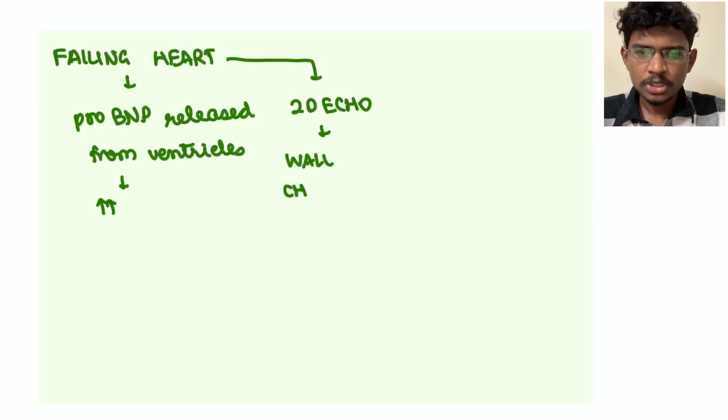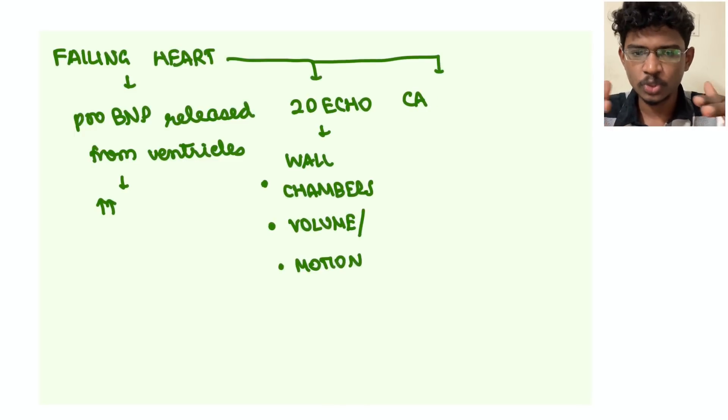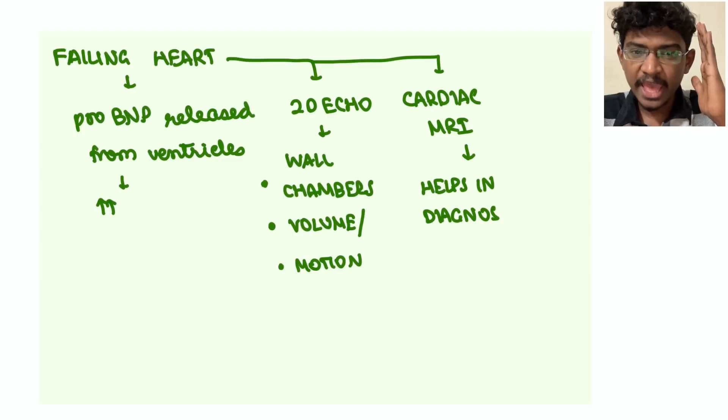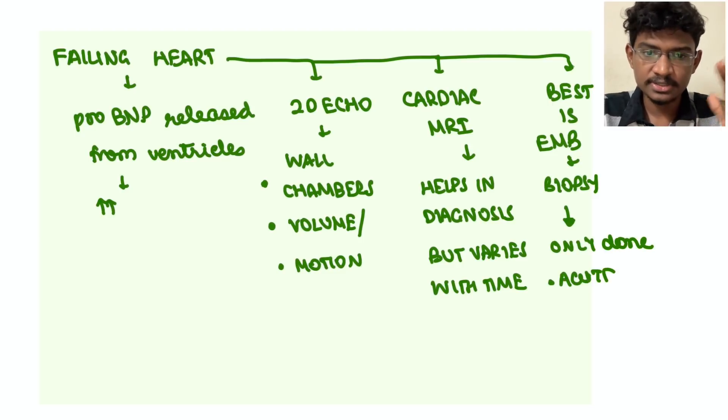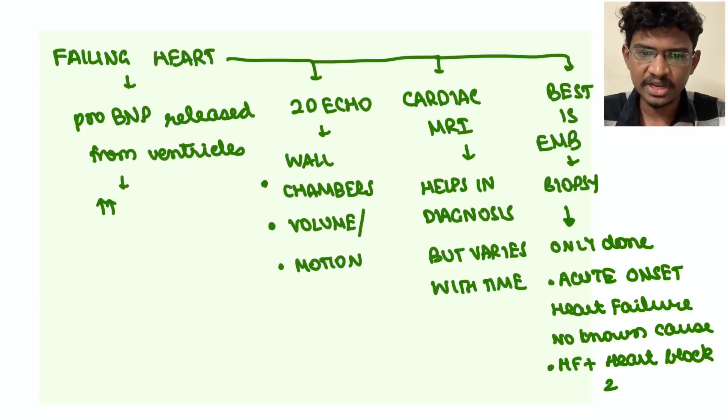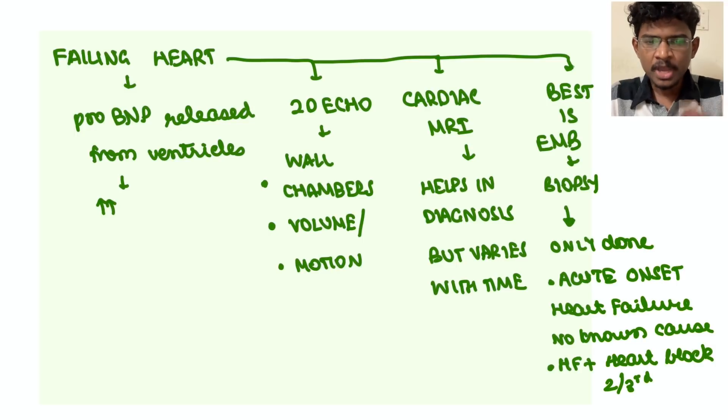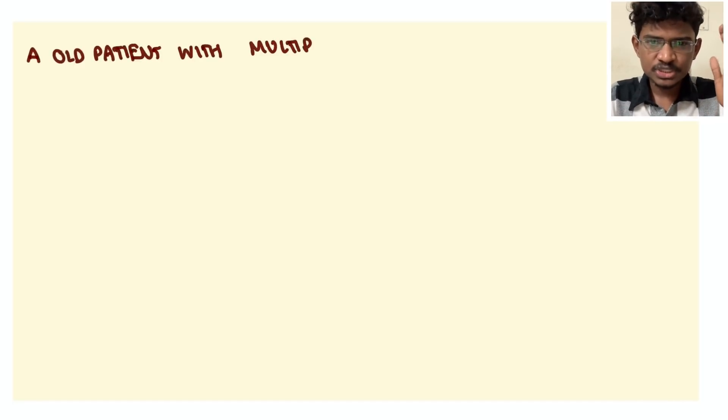Next is 2D echo we'll do to see the heart ejection fraction, how much it is contracting, how is the wall motion, how is the volume of the heart - everything we can see, but it's not diagnostic. Next is cardiac MRI we can do, but it also varies with time. Best will be endomyocardial biopsy. But you can't do for every patient as you like. Only if it is in high diagnostic dilemma with the patient having acute onset heart failure - young patient having acute onset heart failure with no obvious cause - if you know that cause it will help in the management of the patient, proper management, then you can go for endomyocardial biopsy.